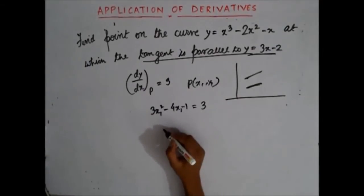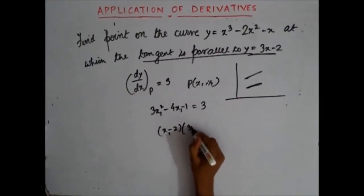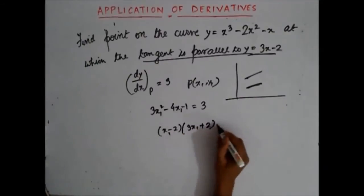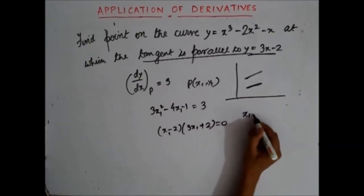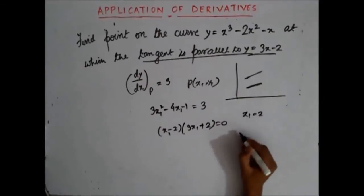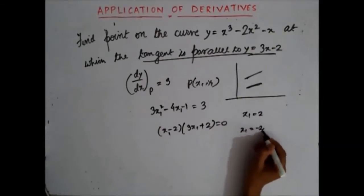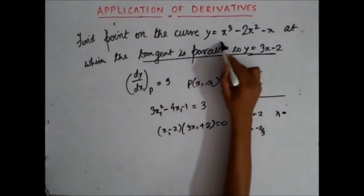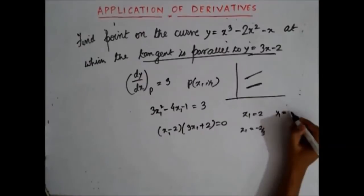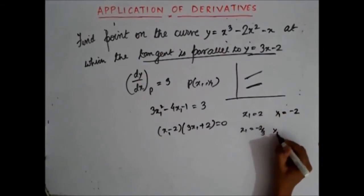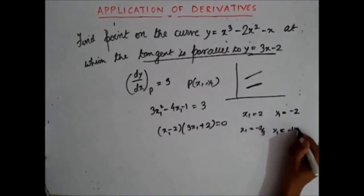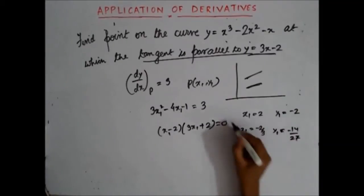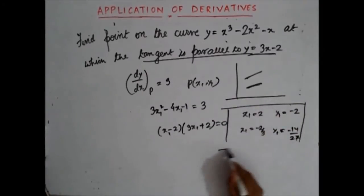That means 3x1² - 4x1 - 1 = 3, because dy/dx at P equals 3. This is a simple quadratic equation. Factorizing gives (x1 - 2)(3x1 + 2) = 0, so x1 = 2 or x1 = -2/3. Putting x1 = 2, y1 = 8 - 8 - 2 = -2. Putting x1 = -2/3, y1 = -14/27. These are the two points on the curve at which the tangent is parallel to y = 3x - 2.